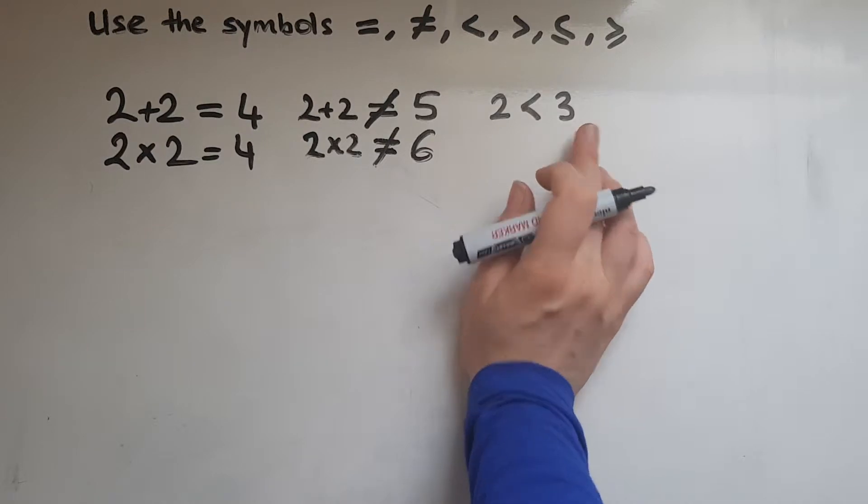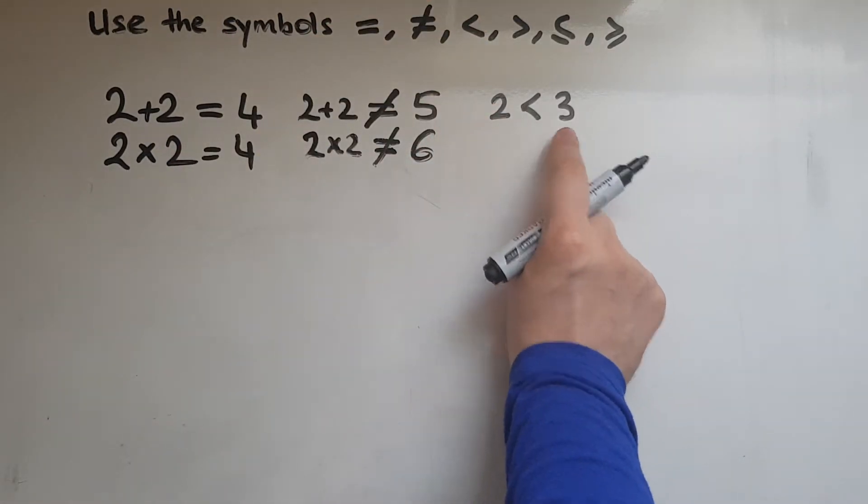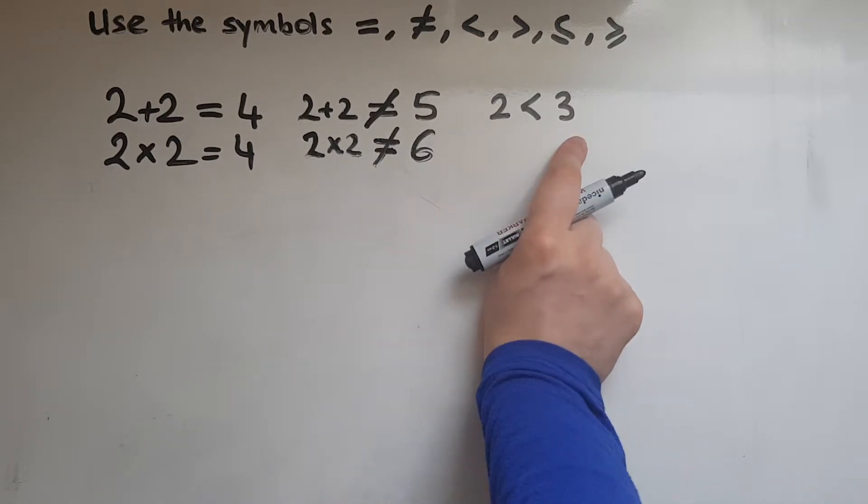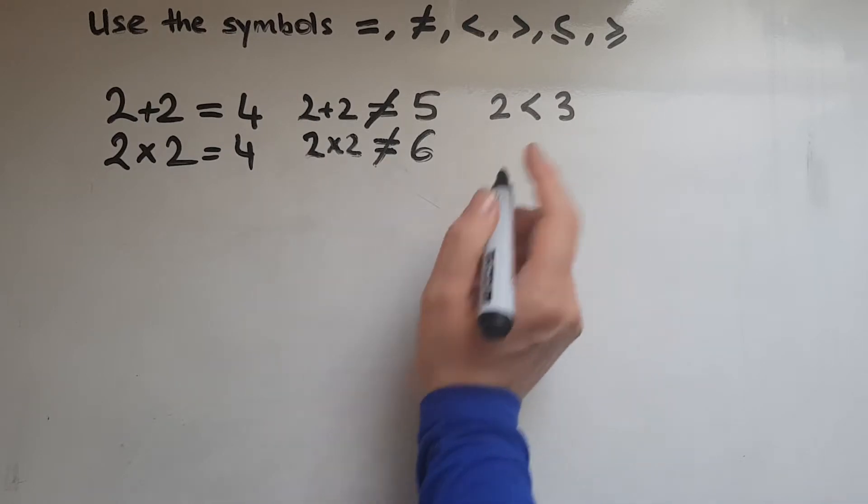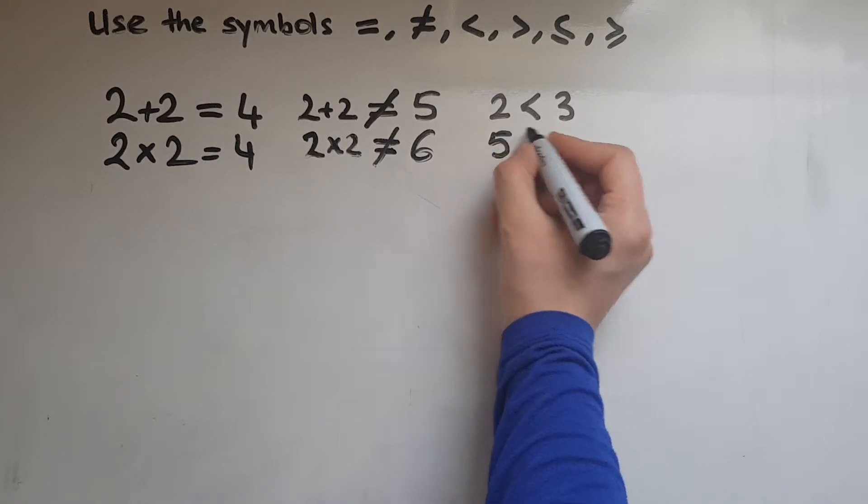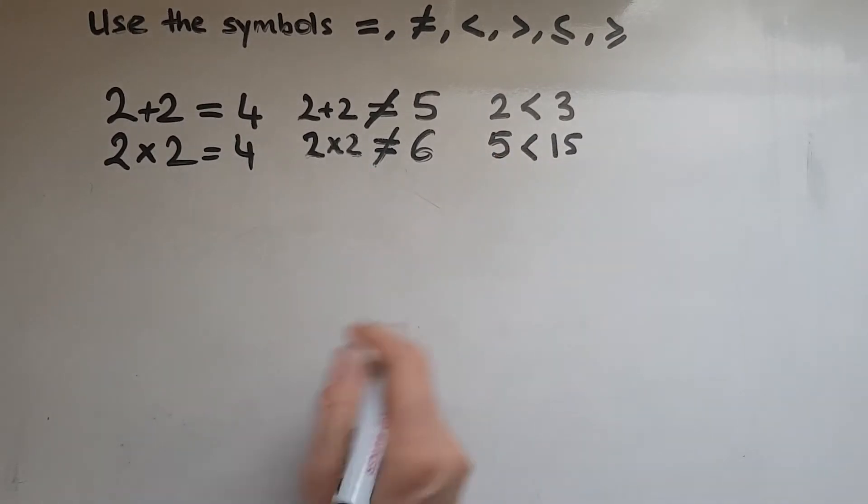Another way to look at it is like a crocodile mouth. It does look like a crocodile mouth and crocodiles like to eat bigger things. So that's gonna eat number 3 because it's bigger. That suggests that 2 is smaller. So 2 is smaller than 3. Let's try another one: 5 is smaller than 15 for example.